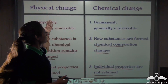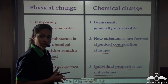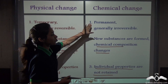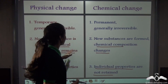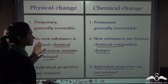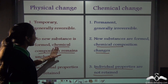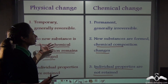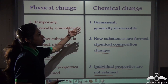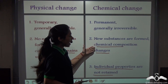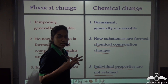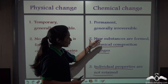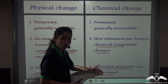So now you know the difference between physical changes and chemical changes. First, physical changes are generally reversible, whereas chemical changes are generally irreversible. Secondly, no new substance is formed and the chemical composition of the original substance remains unchanged in a physical change, whereas during a chemical change, a new substance is formed and the chemical composition changes. This means the individual properties of the original substance are retained in physical changes.